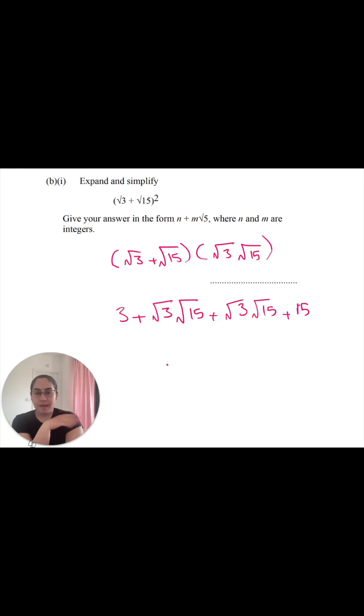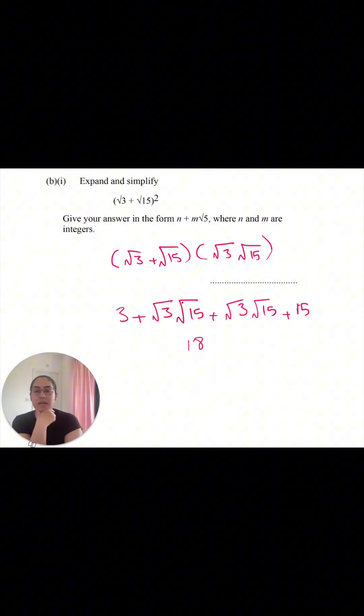Now, to simplify this, we've done the expansion part, now we need to simplify. So in order to simplify, we look at these two. The numbers we can add together. 3 plus 15 is equal to 18. That's nicely simplified, so common terms. Then we have the square roots to deal with.